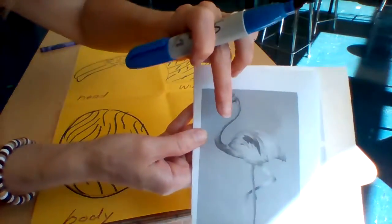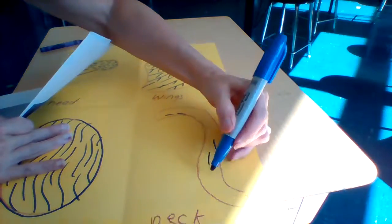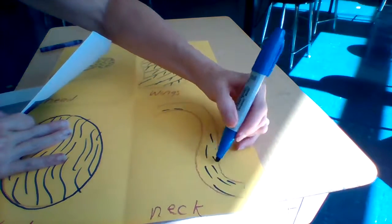And then I have this neck, and again, it's just little, I'm seeing like little tiny marks, not many, because the feathers are really smooth on the neck.